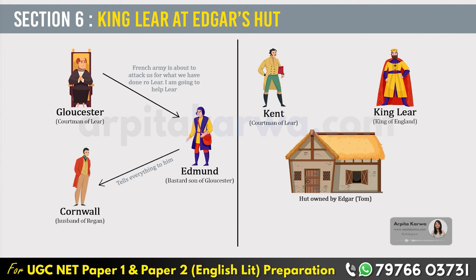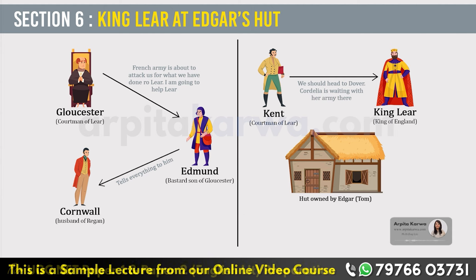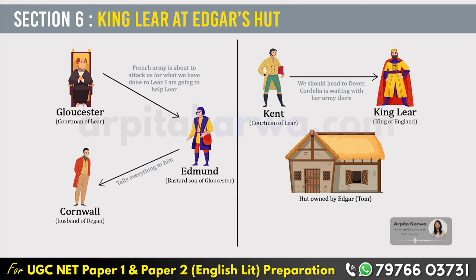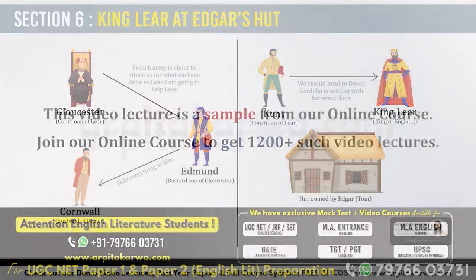On the other hand, Kent tells King Lear to immediately go to Dover, where his youngest daughter Cordelia is waiting with the French army so that they can defeat the attackers of Goneril and Regan. Kent also tells him that his two daughters and their husbands are planning to kill him.